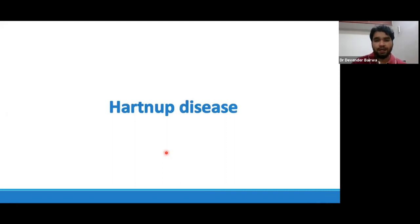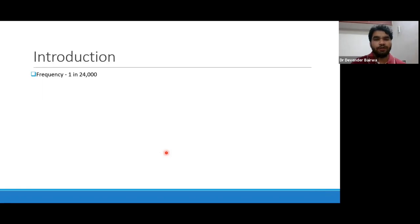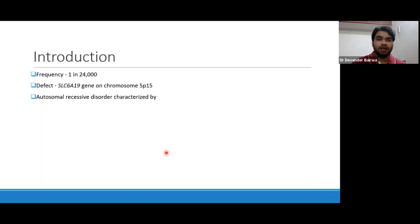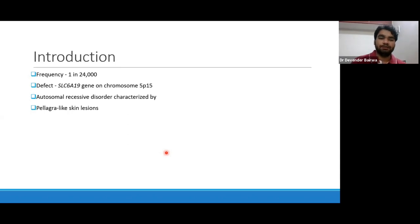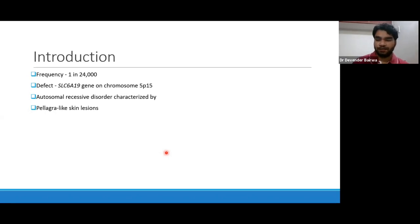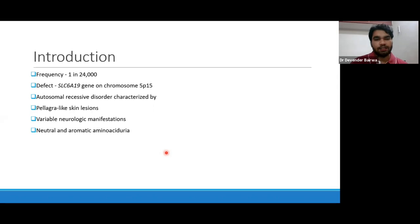Coming to Hartnup disease — frequency of 1 in 25,000 people, and defect is generally in the SLC6A19 gene. The disorder is autosomal recessive and generally presents with pellagra-like skin lesions. Pellagra is basically due to deficiency of niacin/nicotinic acid. This niacin is formed from tryptophan. In Hartnup disease there is a defect in excretion of aromatic and neutral amino acids — so tryptophan is also lost, and that's how this disease presents with pellagra-like skin lesions. There is aminoaciduria involving both neutral and aromatic amino acids.